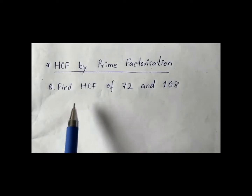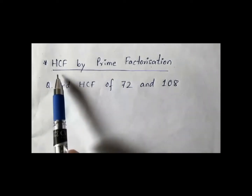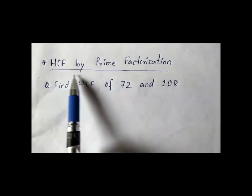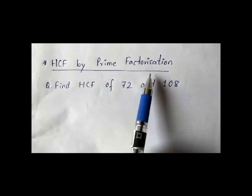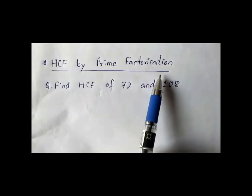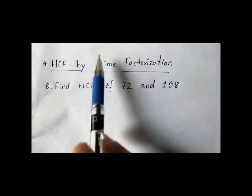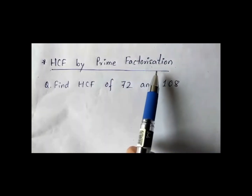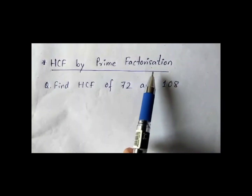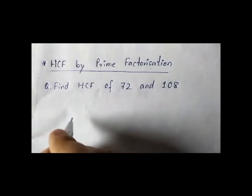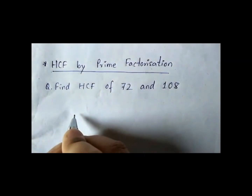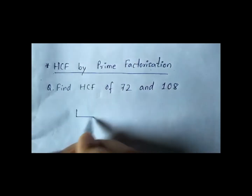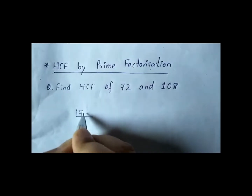Now let us learn how to find HCF by prime factorization. You have already learned how to do prime factorization. So let us find the HCF of 72 and 108 by prime factorization.